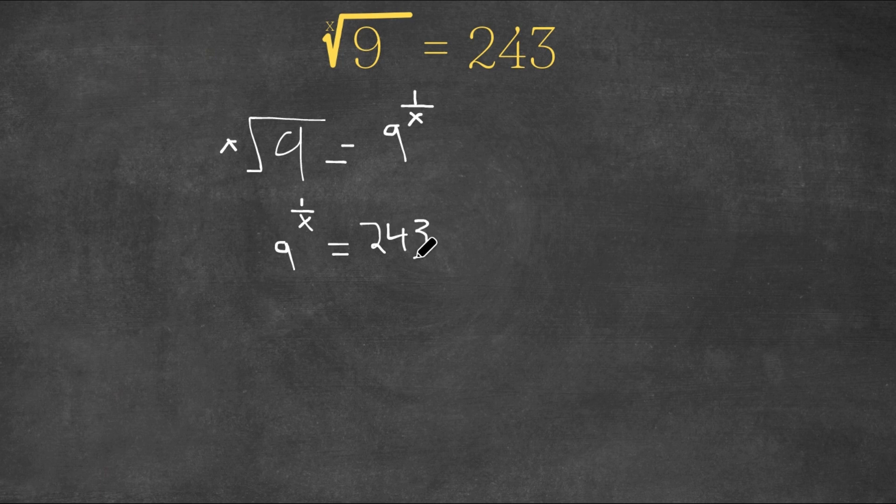And now what we want to do is we want to make our bases here the same. We want to make 9 and 243, we want to make those bases the same, equal. So then we could just make our exponent equal and form a simple equation to solve.